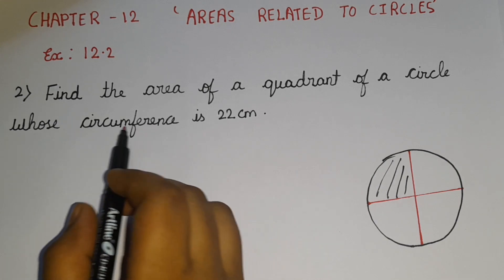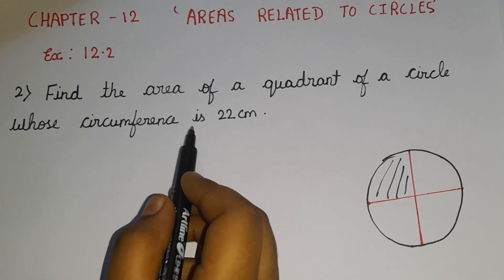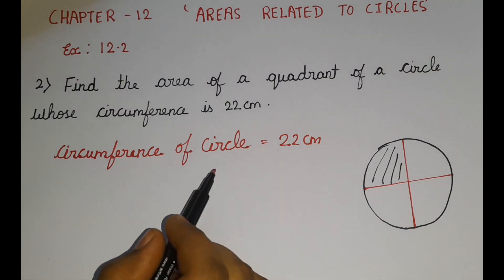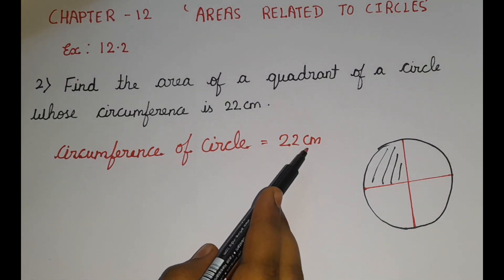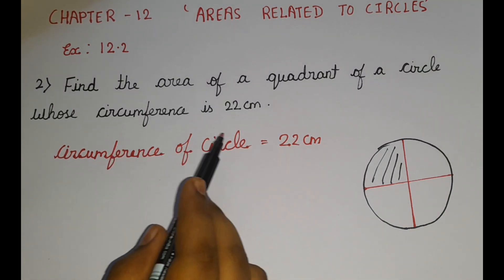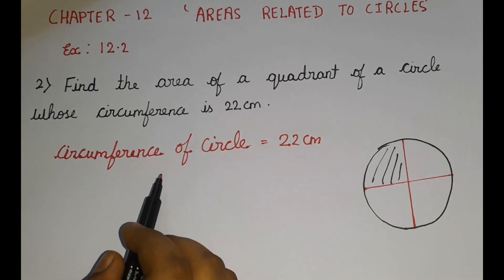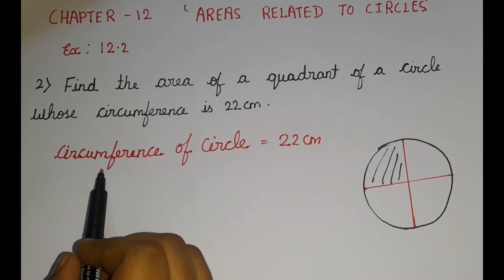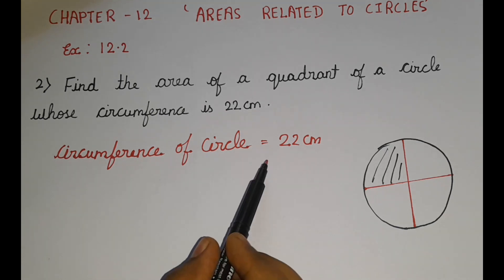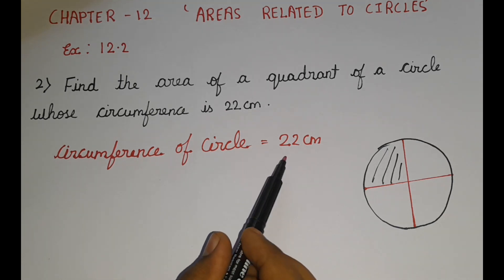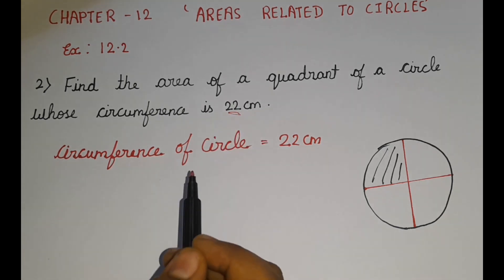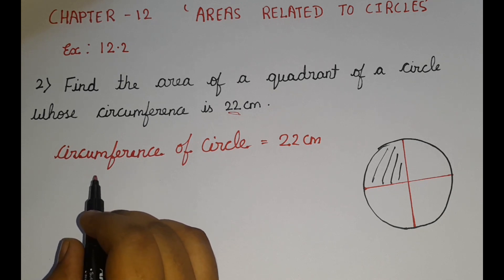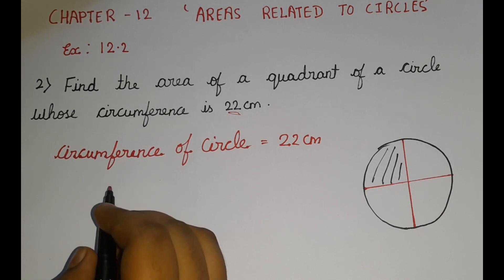We are going to be finding the radius by using this value. Circumference of the circle is equal to 22 centimetres, as mentioned in the question. So what is the formula for circumference of a circle?